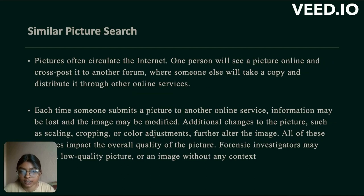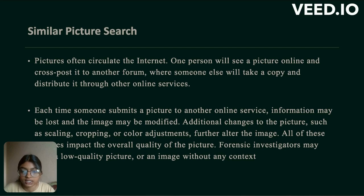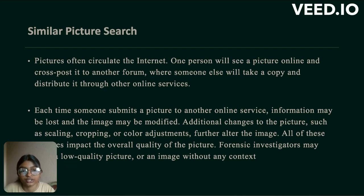Next is similar picture search. Pictures often circulate the internet — one person sees a picture online and cross-posts it to another forum, where someone else distributes it to other online servers. Each time someone submits a picture to another online service, information may be lost and the image may be modified. Additional changes such as scaling, cropping and color adjustment further alter the image, impacting its overall quality. A forensic investigator may have a low-quality picture or an image without any context.